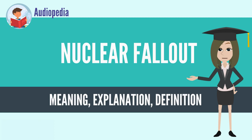Free neutrons are unstable, decaying into a proton, an electron, plus an anti-electron neutrino, with a mean lifetime of 887 seconds — about 14 minutes, 47 seconds.